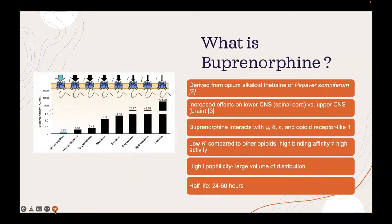It is interesting to note that its effects are more defined in the lower CNS as opposed to the upper CNS. Animal studies from the Ding et al. study indicated that a spinal injection of naloxone, an opioid antagonist, blocked analgesia of buprenorphine, but subspinal injection of naloxone did not block the buprenorphine analgesic properties.